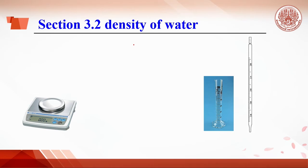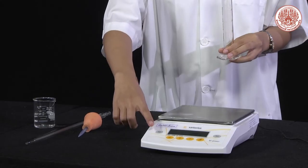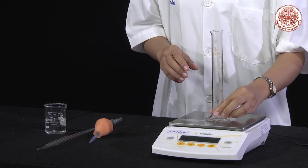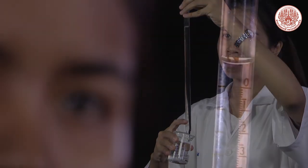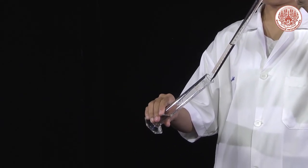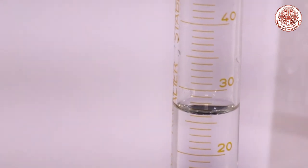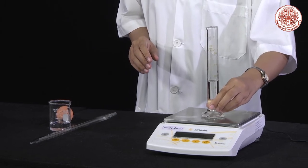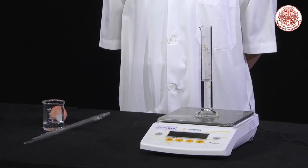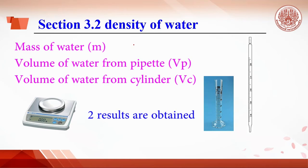Section 3.2: Density of water. Density equals mass divided by volume. Start by weighing a dry, clean 50 mL graduated cylinder. Then pipette 25 mL of tap water and transfer it to the cylinder. Read the volume of the tap water in the graduated cylinder, then weigh the cylinder containing the tap water. With this measurement, the density of water will be obtained.